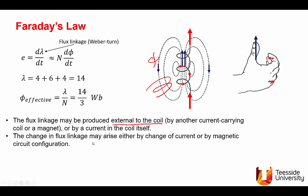The change of flux or flux linkage can be either by changing the current or by changing the magnetic circuit configuration. Because phi is the magnetomotive force NI over the reluctance R. This reluctance is L over mu A. You can change the geometry, A or L, or you can change I, and that will produce change of phi and the flux linkage.